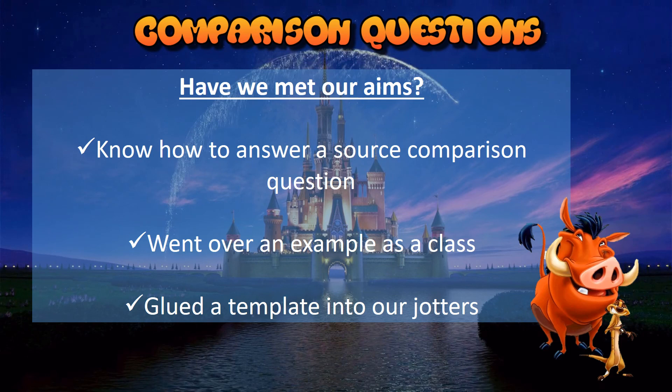Going back — have we met our aims today? We should now know how to answer a source comparison question. If you're still not sure, look back over this presentation. We went over examples in class: one on Kirriemuir, one on Scotland's industries, and one on the abolition of the slave trade. Make sure you have glued the template into your jotter or have copied it down.